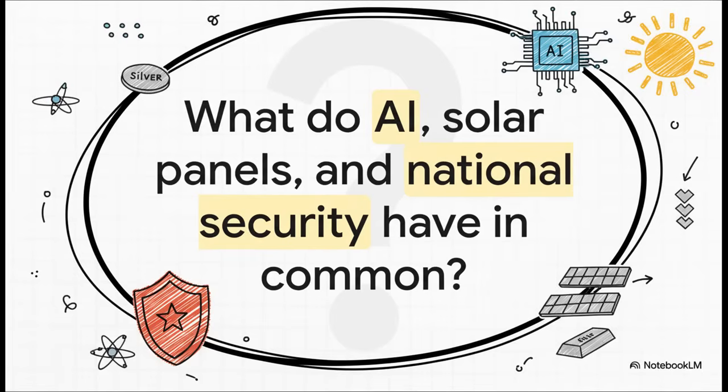So here's a question for you. What could AI, solar panels, and national security possibly have in common? Well, the answer, and this might surprise you, is silver. Yeah, this isn't just about your grandmother's jewelry anymore.